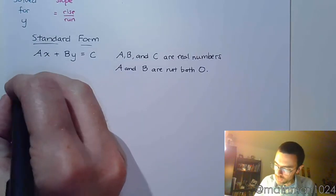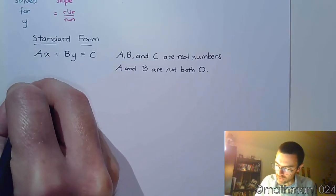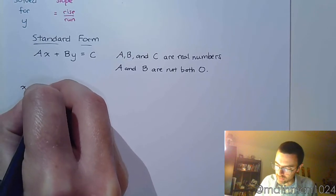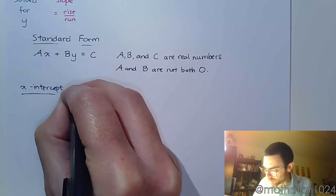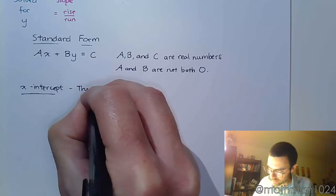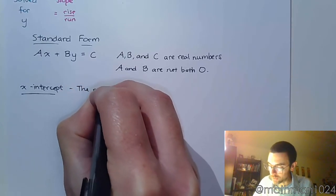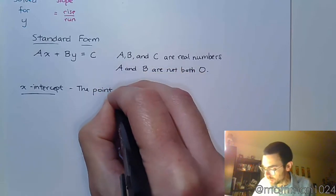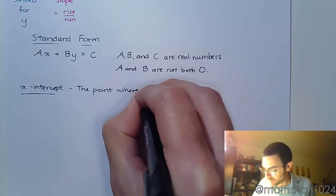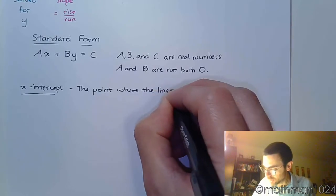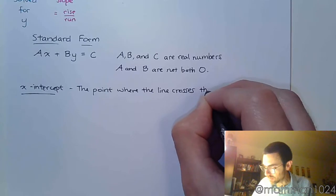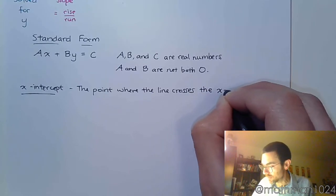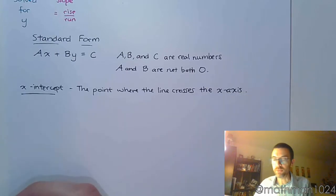When we talk about intercepts, so let's talk about the x-intercept. The x-intercept is the point, and it's important we understand it as a point, it's the point where the line crosses the x-axis.